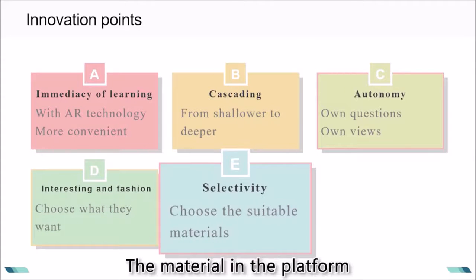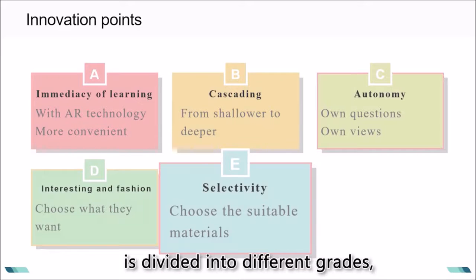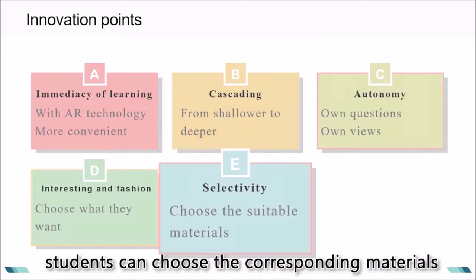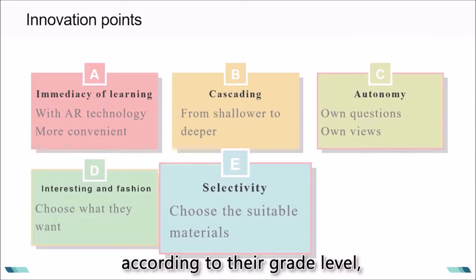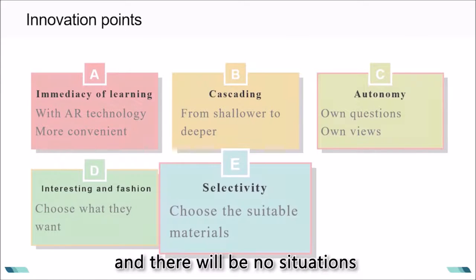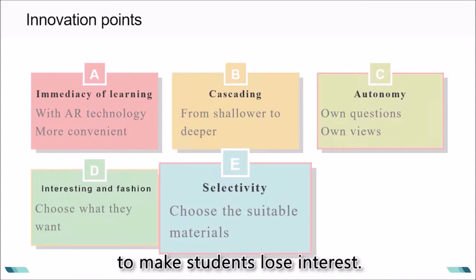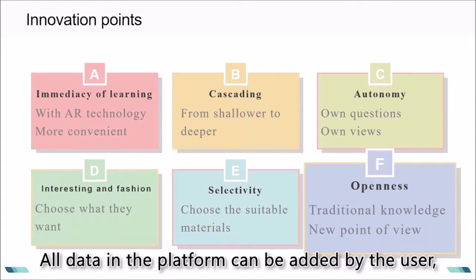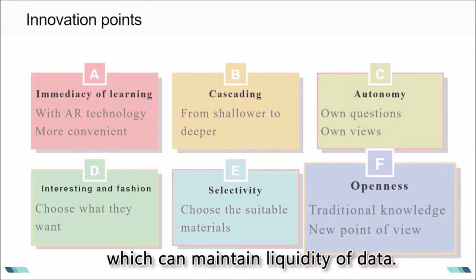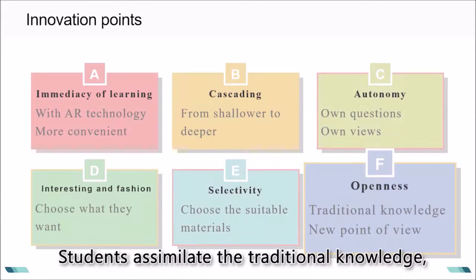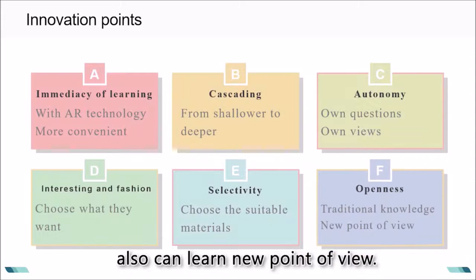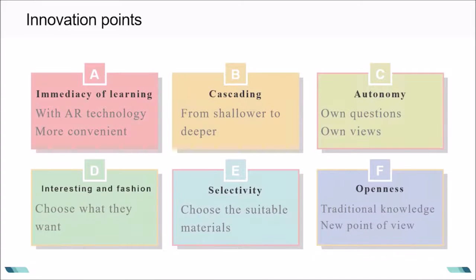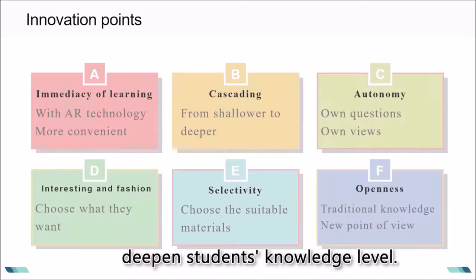Selectivity: The material in the platform is defined in different ways. Students can choose the corresponding materials according to their grade level, and there will be no situations where the content is too deep or too shallow to make students lose interest. Openness: All data in the platform can be added by the user, which can maintain fluidity of data. Students learn the traditional knowledge but also can learn new points of view. They can recognize things from different angles and deepen students' knowledge level.